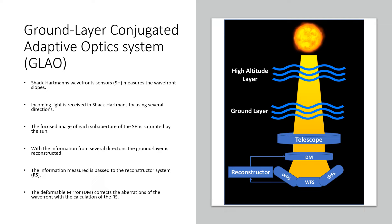To replicate the parameters of a real telescope, the Shack-Hartmann sensors are formed, in this case, by 15x15 subapertures.